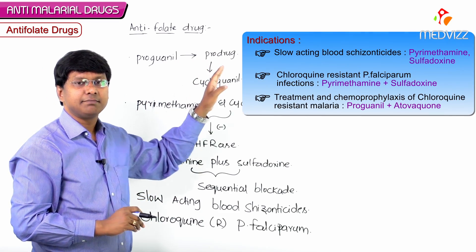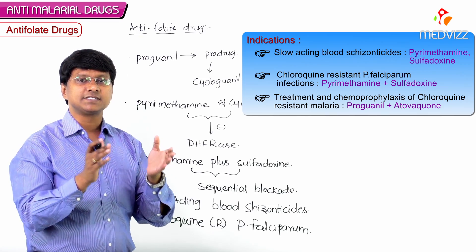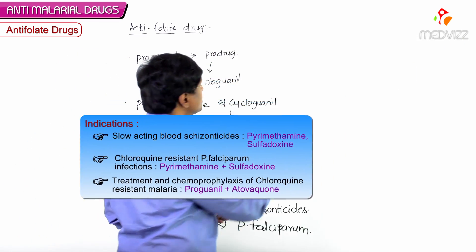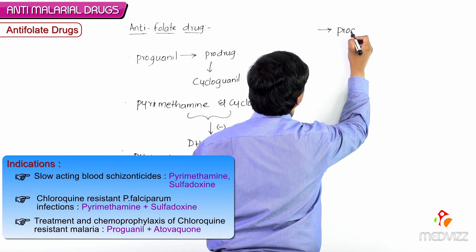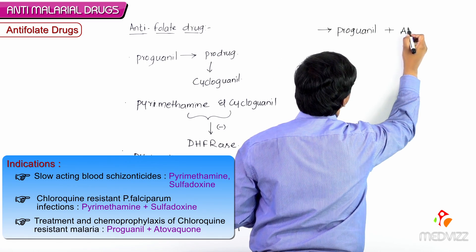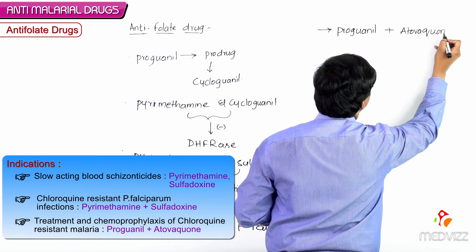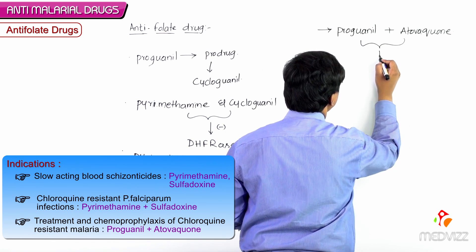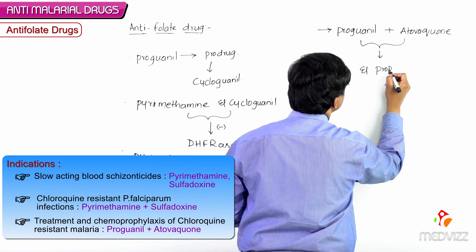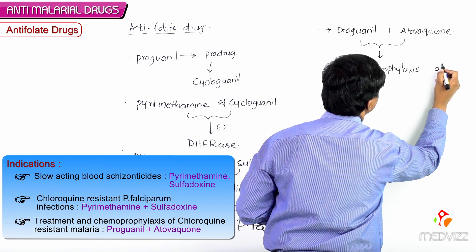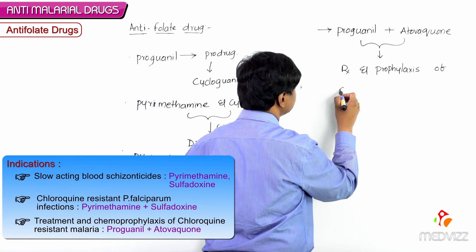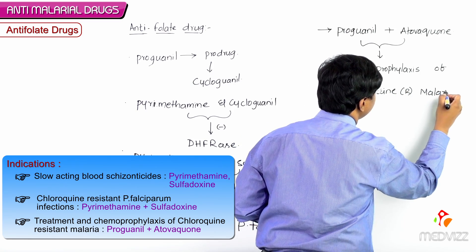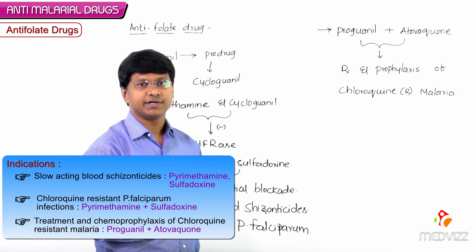Proguanil can be combined with atovaquone, and this combination can be used for the treatment as well as chemoprophylaxis of chloroquine-resistant malaria. So remember this important point: proguanil combined with atovaquone is useful for treatment and prophylaxis of chloroquine-resistant malaria.